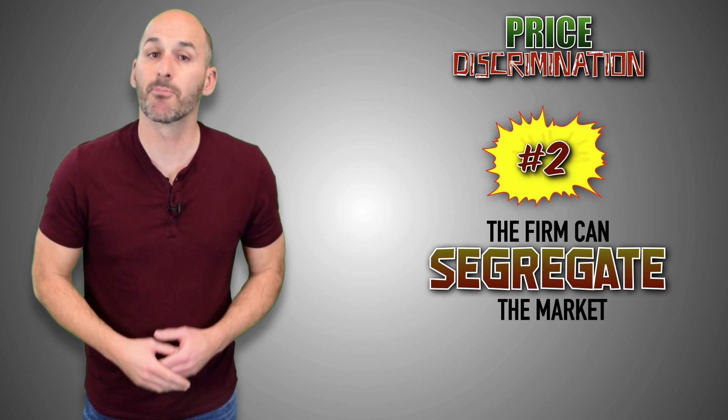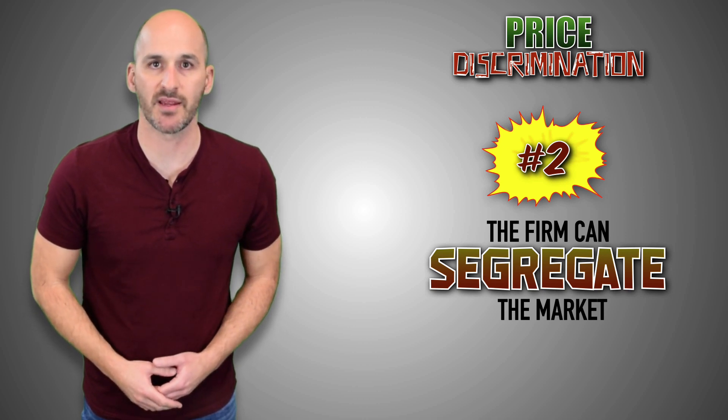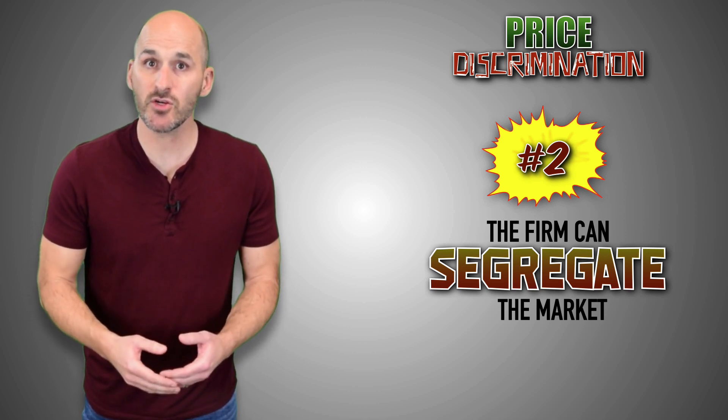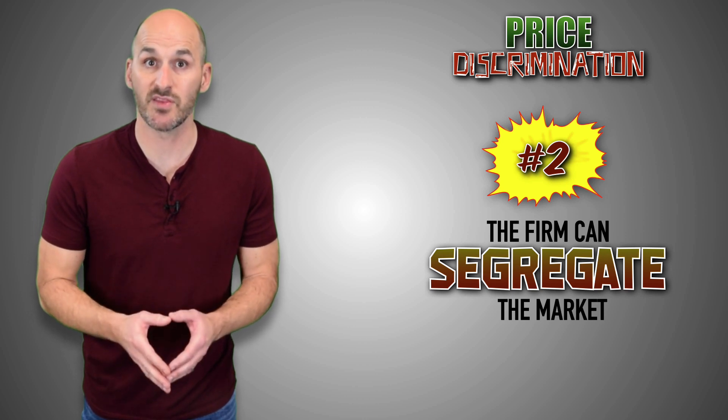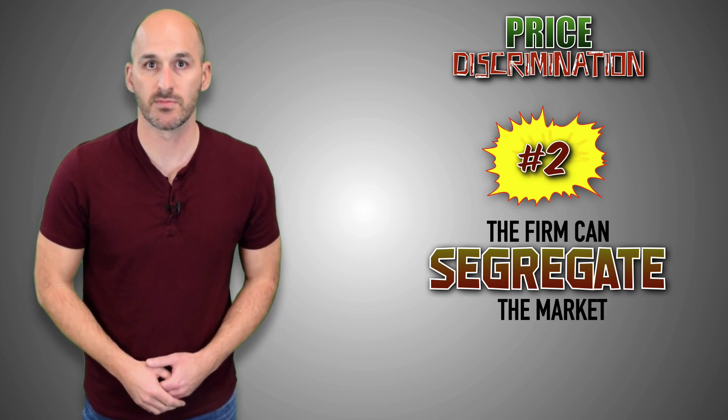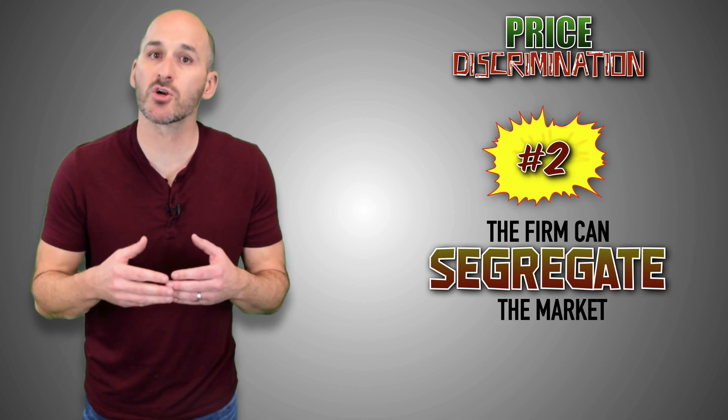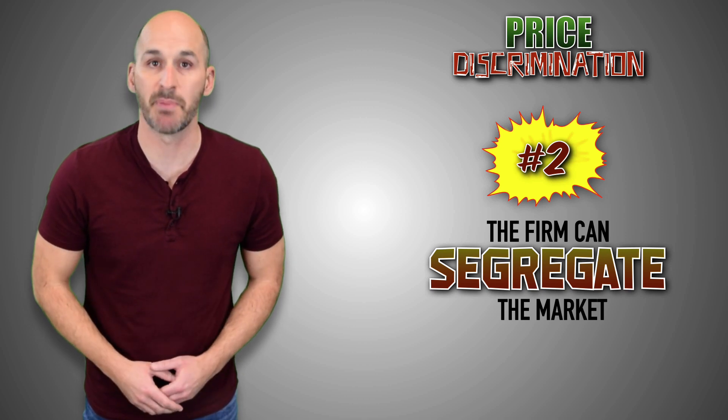In today's economy, a price discriminating monopoly can effectively keep a market segregated by selling its goods online. Online marketplaces make it easier to charge different prices to different buyers because it's unlikely that consumers are communicating with each other. As a result, each buyer will assume they're being charged the same price as everyone else and have no objections to paying it.